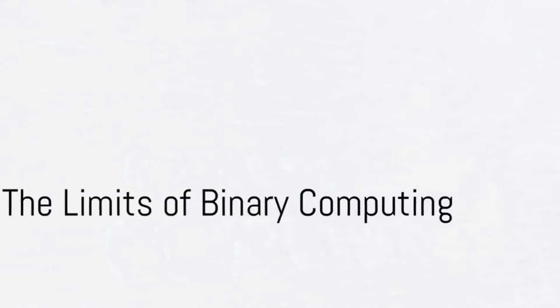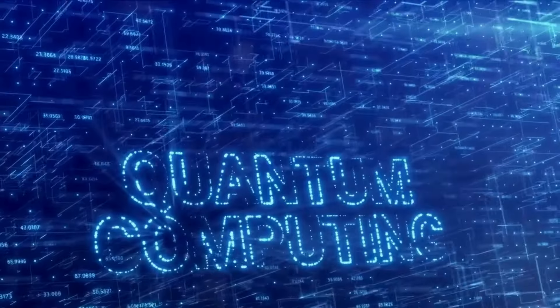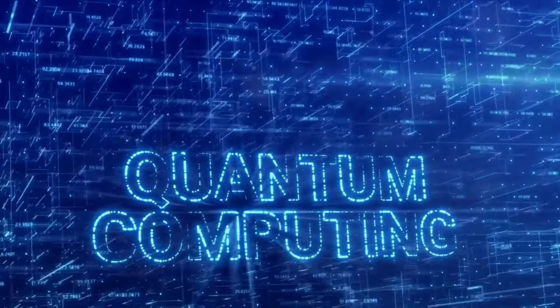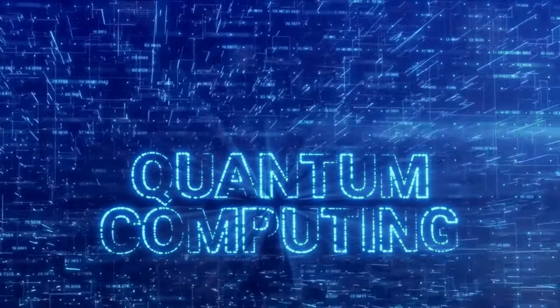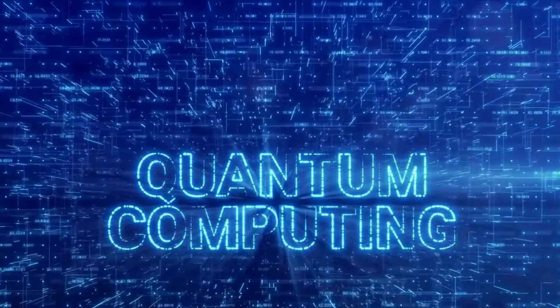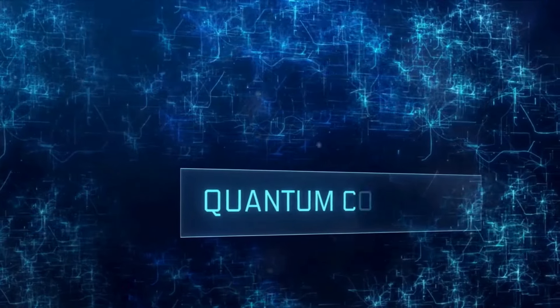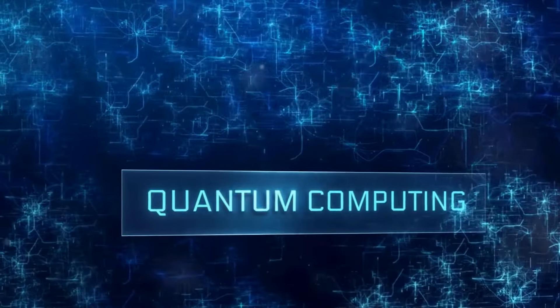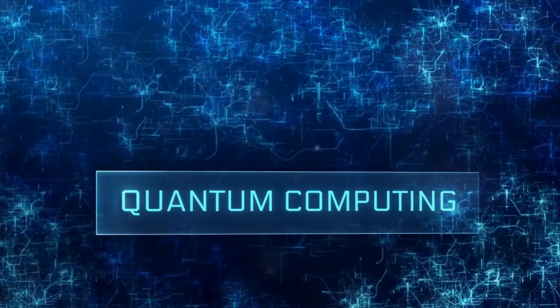Ever wondered why your super-fast computer still can't simulate something as simple as the behavior of a few dozen electrons? It's a question that can keep tech enthusiasts and scientists up at night, and it all boils down to the inherent limitations of the classical binary computing systems we've come to rely on.